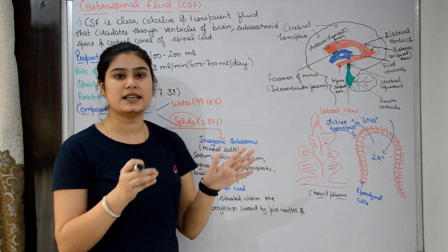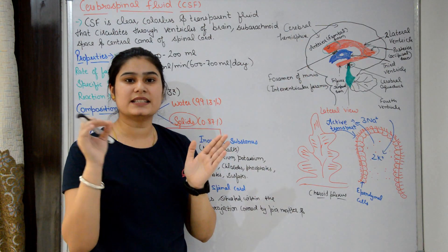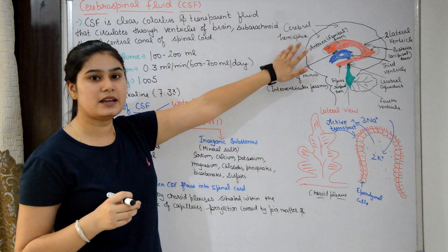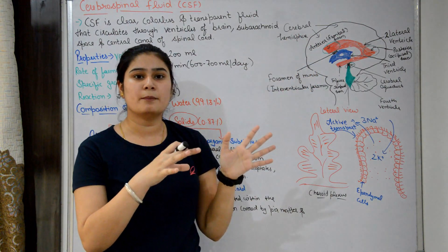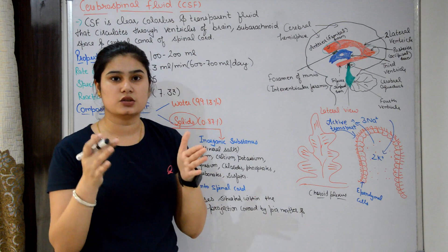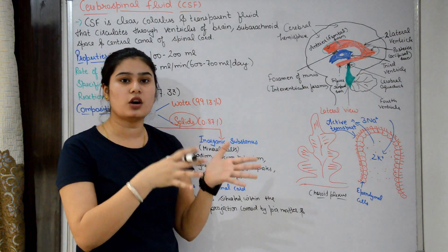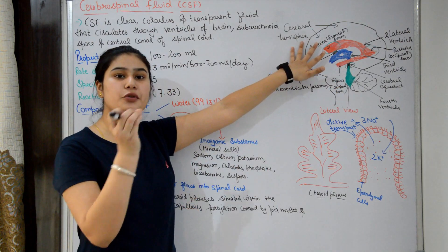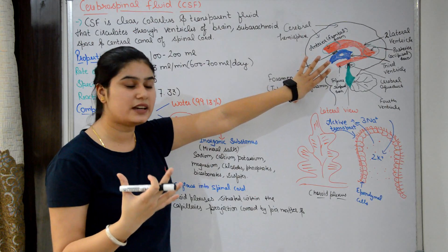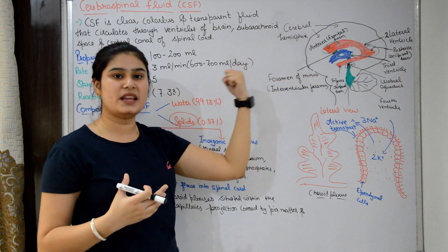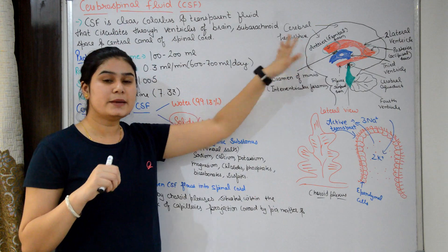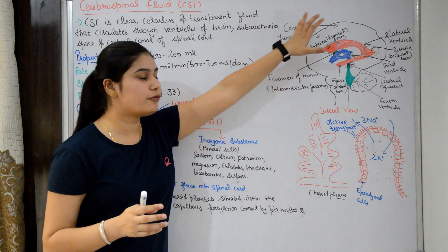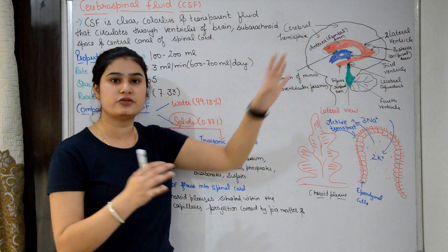The second function is the blood-CSF barrier. This barrier controls what enters and exits the brain — allowing nutrients to reach the brain while removing toxins. The third important function is that CSF helps maintain uniform intracranial pressure around the brain, which also helps protect it from injury.